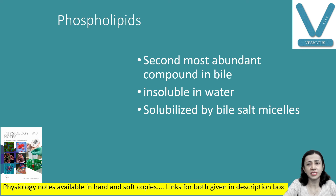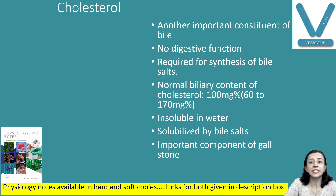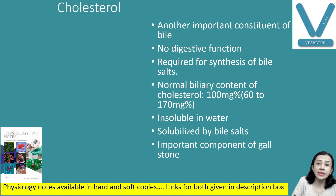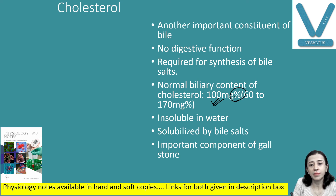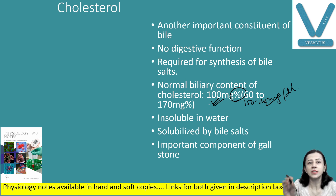Next constituent of bile is phospholipid — the second most abundant compound in bile after bile salts. They are insoluble in water and are solubilized by bile salt micelle formation. Cholesterol is also an important constituent of bile. It has no digestive function, but is required for the synthesis of bile salts — forming colic acid and chenodeoxycholic acid. Normal biliary concentration of cholesterol is 100 mg per deciliter. In blood we have 150 to 240 mg per deciliter. Cholesterol is insoluble in water, but if bile salts are present they keep cholesterol in soluble form; if bile salts are less, cholesterol forms gallstones.